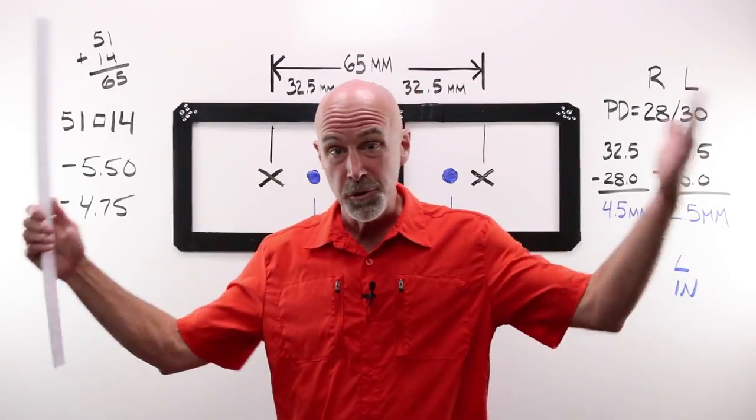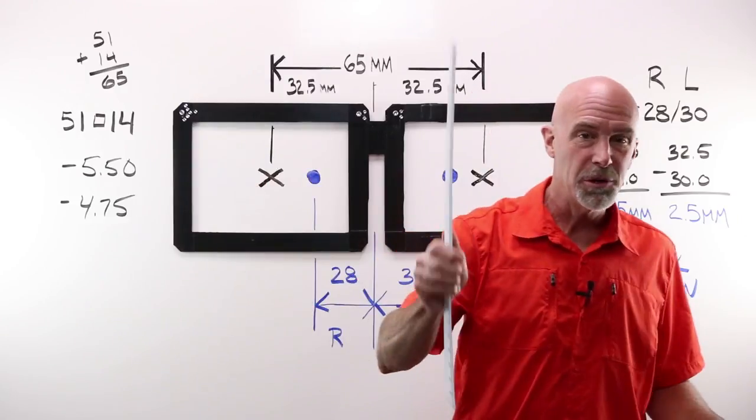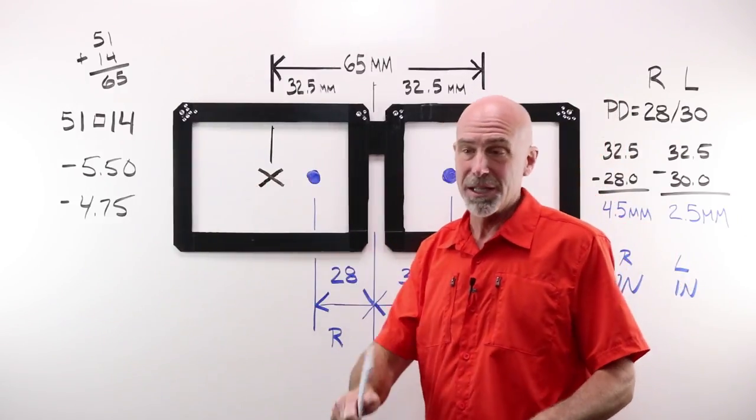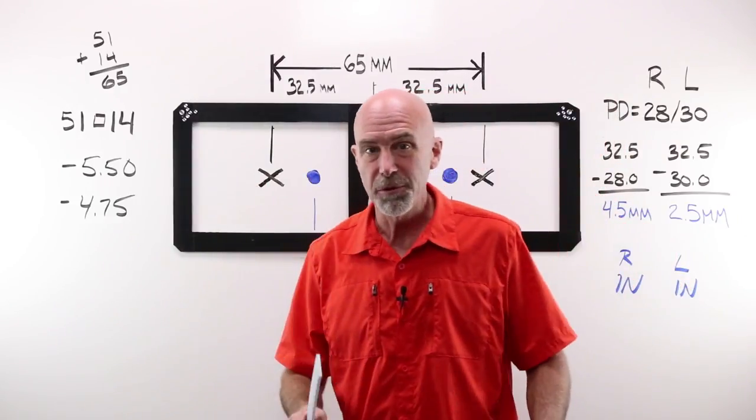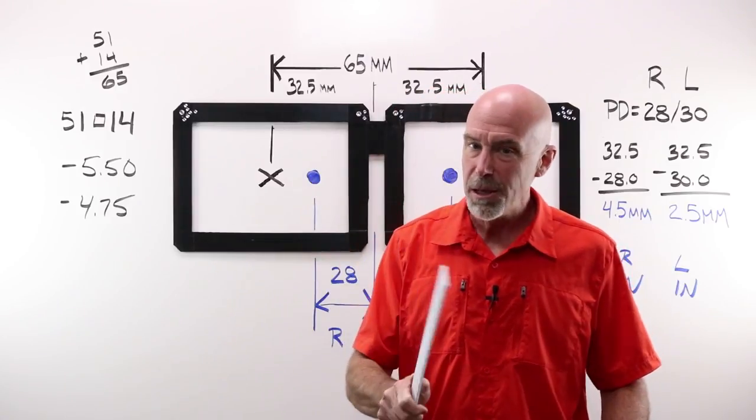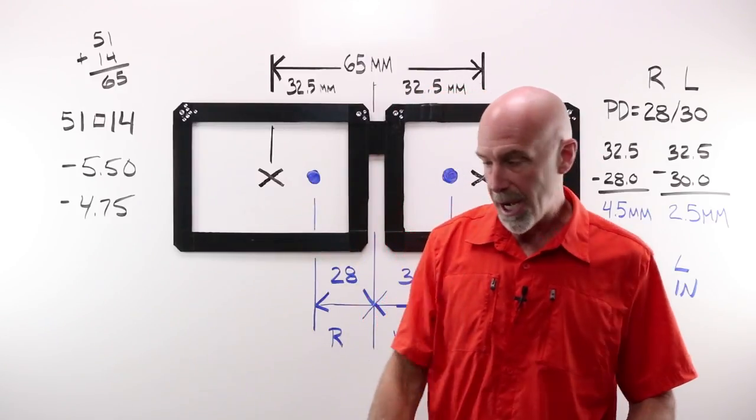Example number two. And don't go anywhere if you're getting the hang of this and you say, my God, I wish you would just hurry up and move on with things. Stick around for example number three because I'm going to do a zero in and out with that one. For example two, we will have a right of minus 5.50, a left of minus 4.75, a customer PD of 28/30, and a frame with a boxing system of 51-14.